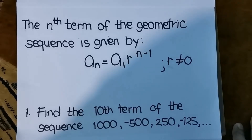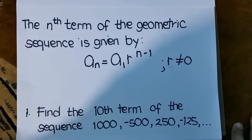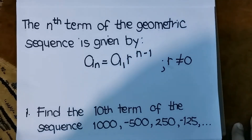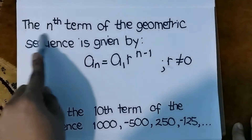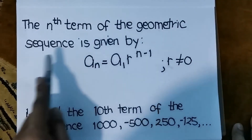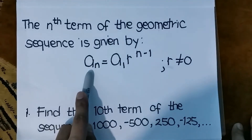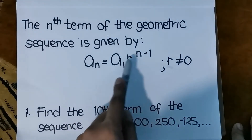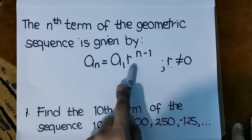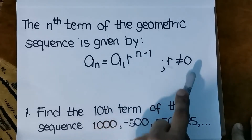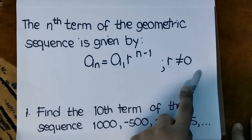From our last video lesson about geometric sequences, you already know how to identify the common ratio. We're going to use that in finding the nth term of the geometric sequence, given by the formula: a sub n equals the first term times the common ratio raised to n minus 1, wherein the common ratio should not be equal to 0.